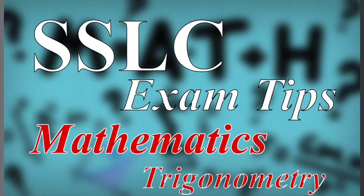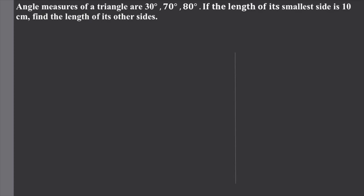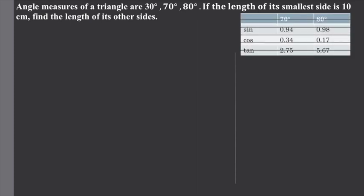Now we are going to discuss the important part in the English section. We are going to discuss two questions. The angle measures of a triangle are 30 degrees, 70 degrees, and 80 degrees. If the length of its smallest side is 10 cm, find the length of its other sides.